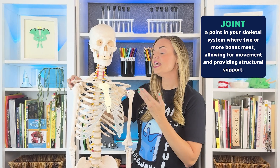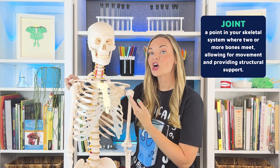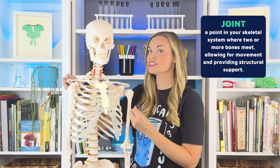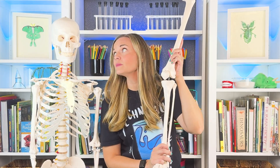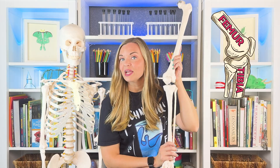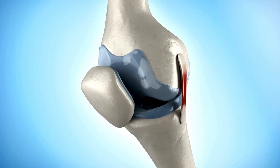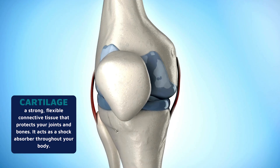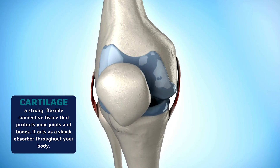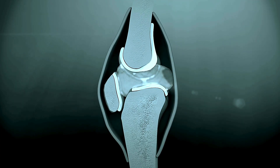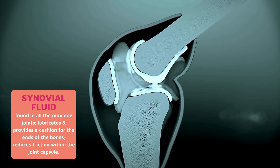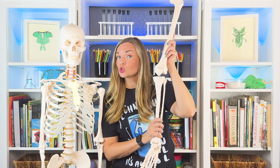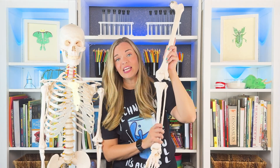A joint is formed by the ends of two bones, which are connected by thick tissues. Let's take a look at the knee joint. The knee joint is formed by the lower leg bone and the thigh bone. The ends of the bones are covered by cartilage, which provides a smooth, almost glassy surface. The joints also produce a fluid called synovial fluid that reduces friction and wear. Too much friction in our joints would be a bad and painful thing.